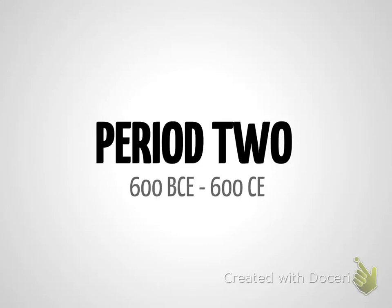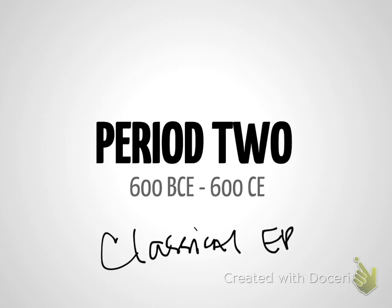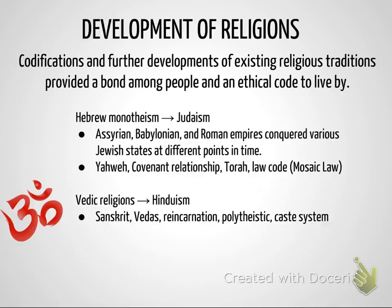Here we are going to quickly review Period 2 for AP World History. This is going to occur between 600 BCE, or Before Common Era, all the way to 600 CE. This is also known as the Classical Era, or Classical Period. We're going to be talking about some very classical empires as we look at Rome and Greece.